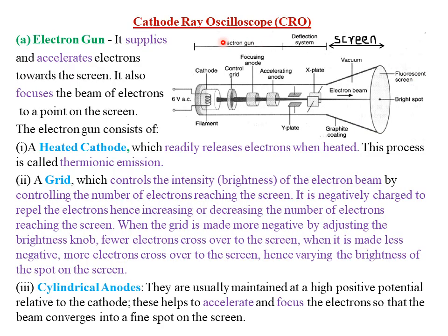Let's discuss the functions of each and every part of a cathode ray oscilloscope. Starting with the electron gun, its main function is to supply the electrons towards the screen, accelerate those electrons towards the screen, and focus the beam of electrons to a point on that particular screen. So the electron gun has three main functions: to supply or produce electrons, accelerate the beam of cathode rays, and focus the electrons on a spot on the fluorescent screen. When you heat the cathode, we have thermionic emission whereby a stream of electrons is produced — that is how the electron gun supplies the electrons.